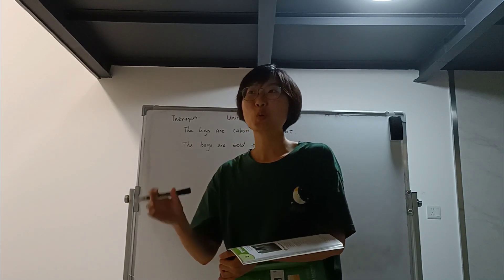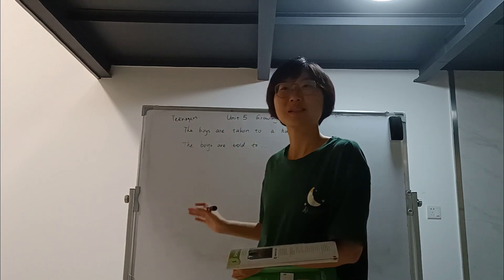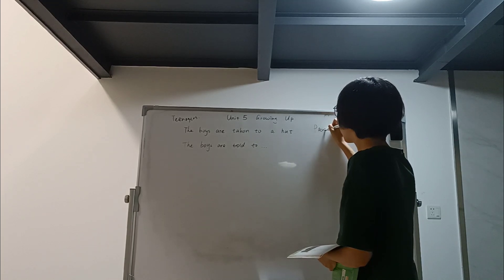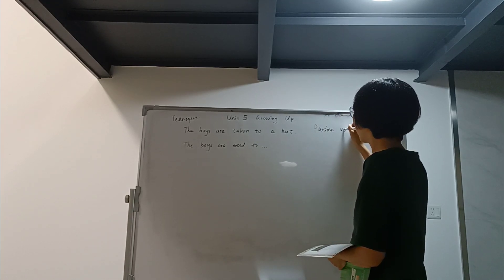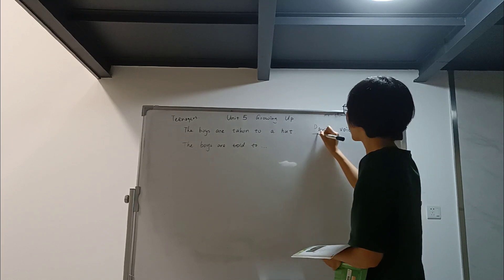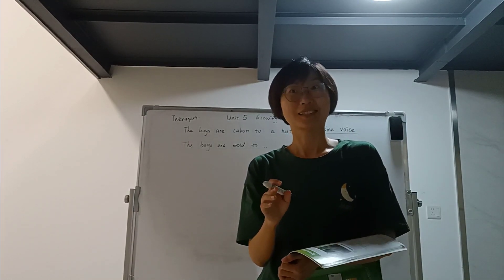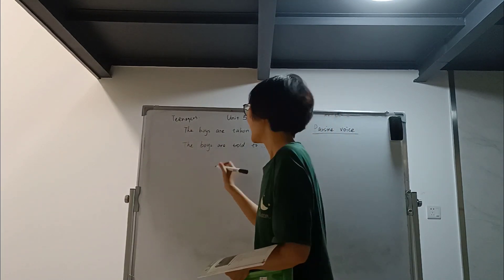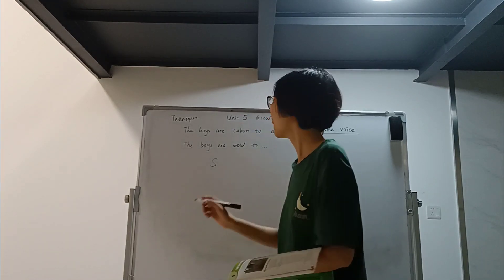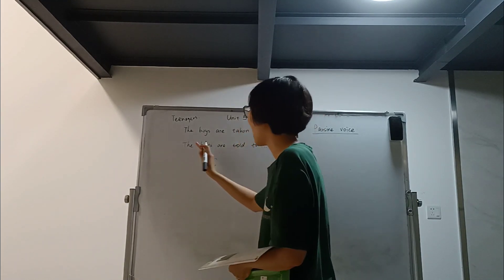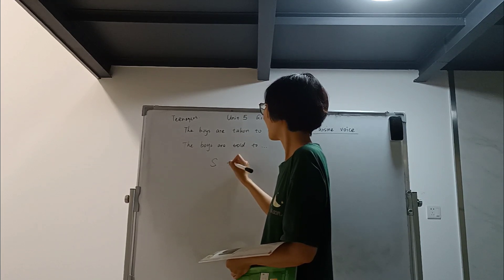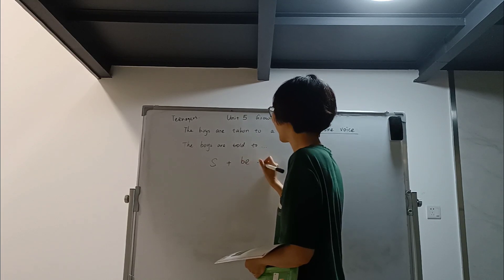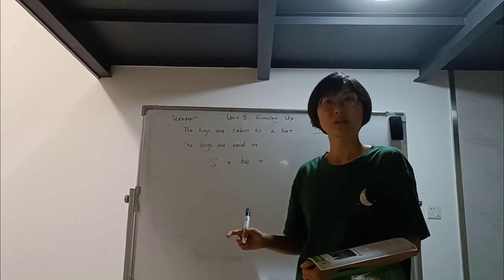So when we don't know who does this action, we can use a structure like this. And this is called the passive voice. The boys is the subject. And what is followed after the boys, the subject? What are these words?